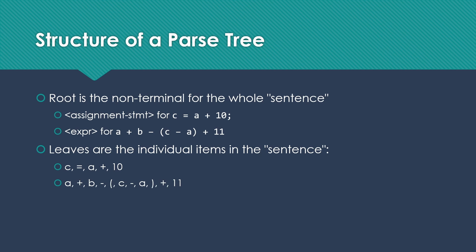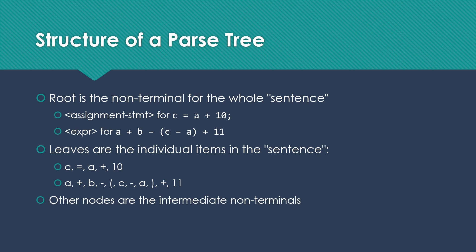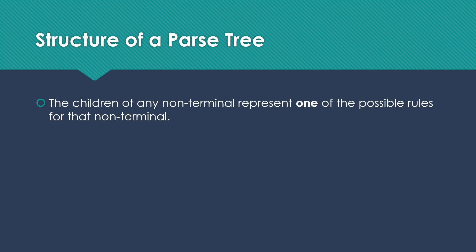For the expression example, the leaves are each of those tokens: A, the plus sign, B, the minus sign, open parenthesis, C, minus sign, A, close parenthesis, plus sign, and 11. Those tokens make up the leaves. In between the root and the leaves, we have any intermediate non-terminals that appear in the grammar. The children of any non-terminal represent one of the possible rules for that non-terminal — a rule that expands the parent into a sequence of terminals and non-terminals, and that sequence becomes the set of children.